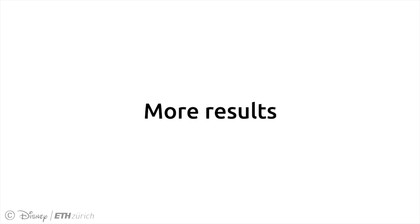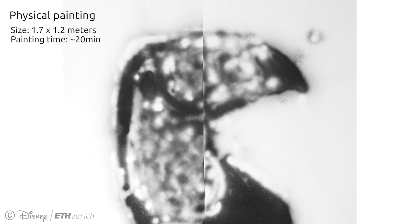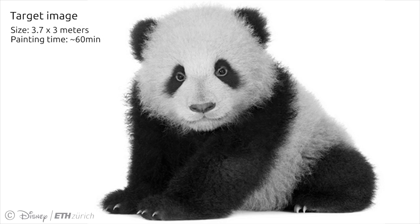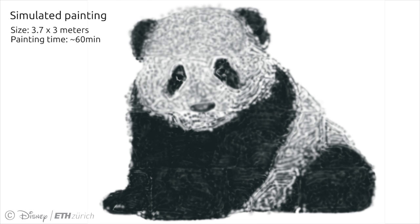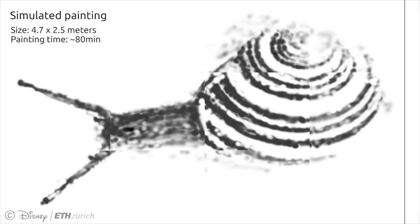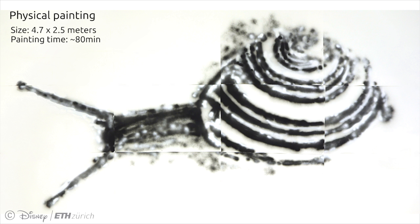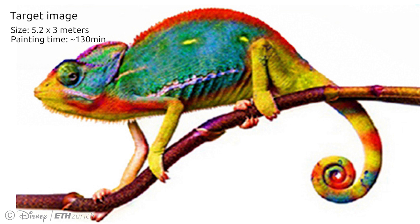Here we show additional painted or simulated results, both grayscale and colored, and with various sizes: a 1.7 by 1.2 meters toucan, a 3.7 by 3 meters panda, a 4.7 by 2.5 meters snail, and a 5.7 by 3 meters chameleon.